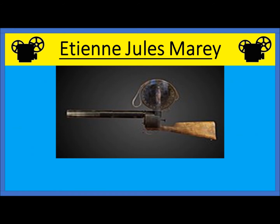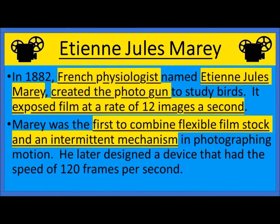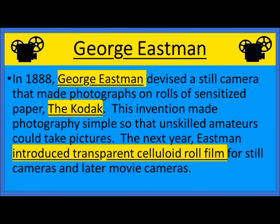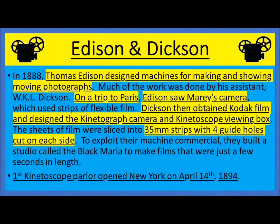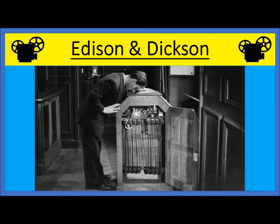Here's a rendering of the photogun. George Eastman may be a more familiar name — he invented the Kodak and introduced the transparent celluloid roll film. Thomas Edison designed machines for making and showing moving pictures. History says that on a trip to Paris, Edison saw Marey's camera and copied it. Dixon, his assistant, obtained Kodak film and designed a kinetoscope camera for taking pictures and a kinetoscope viewing box. The standard established was 35-millimeter strips with four guide holes cut on each side. This picture shows how a kinetoscope would work.